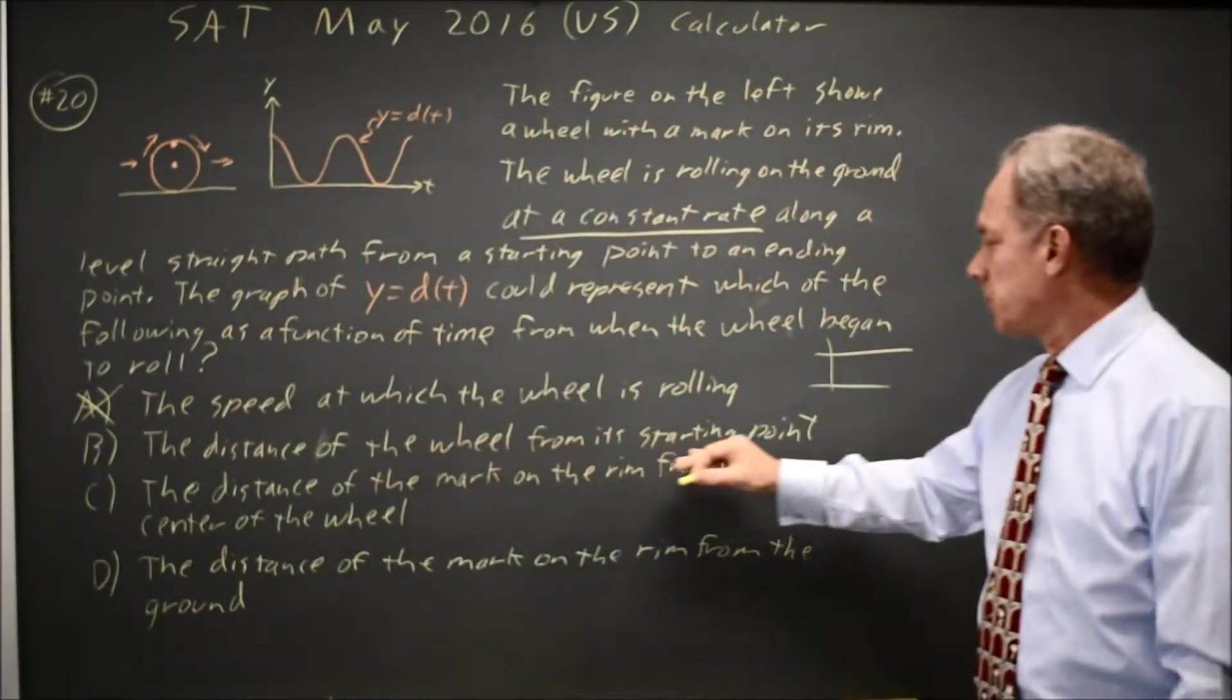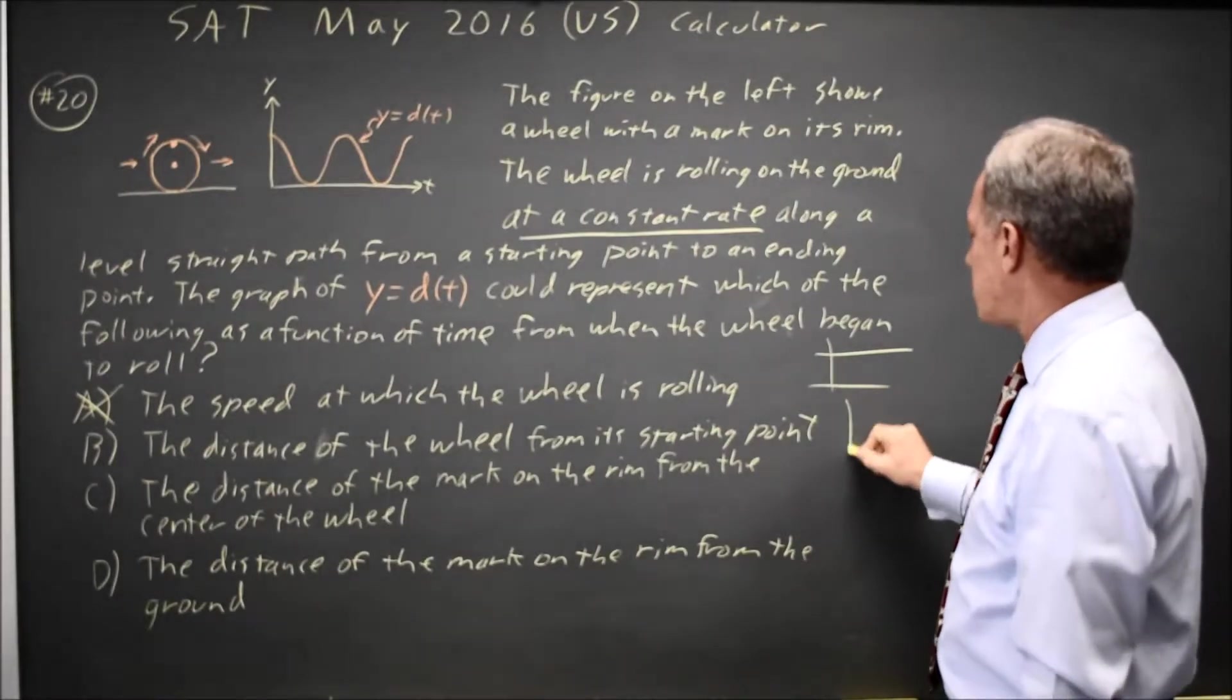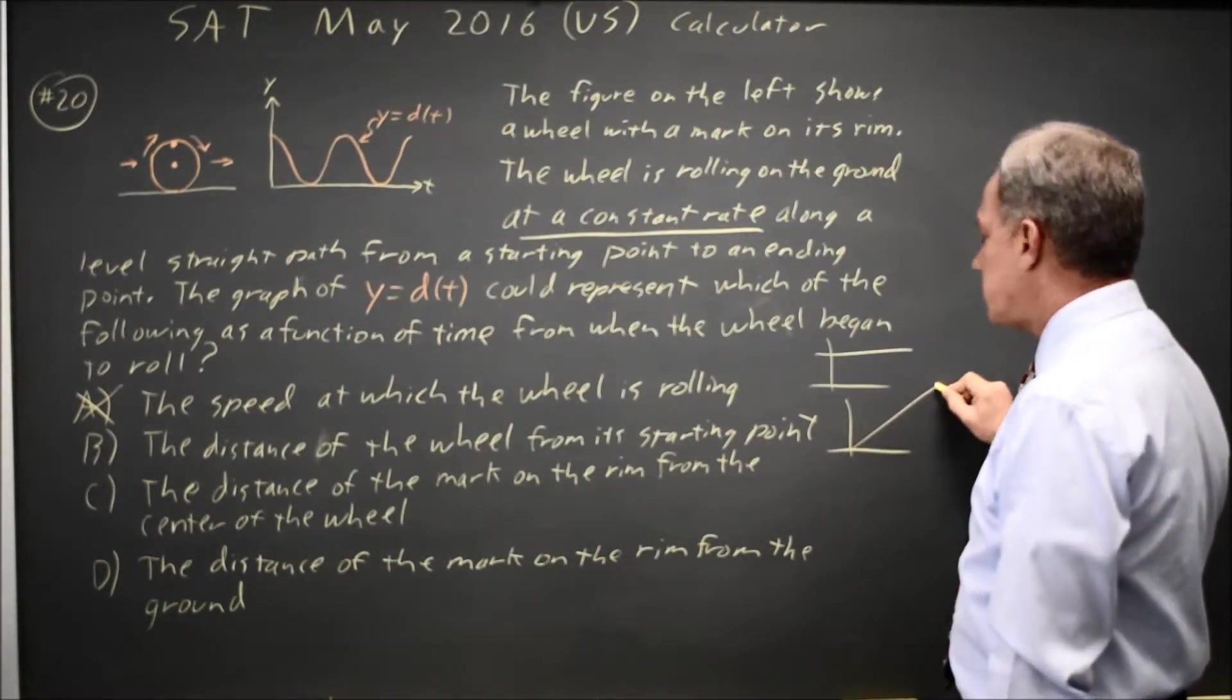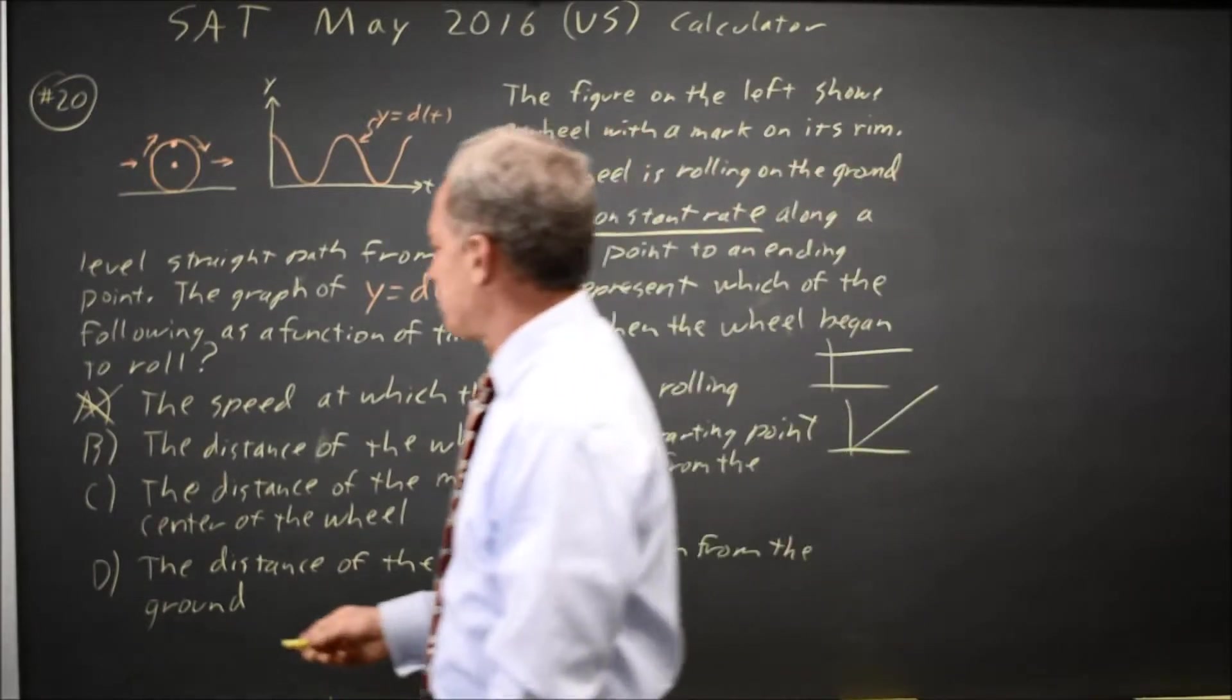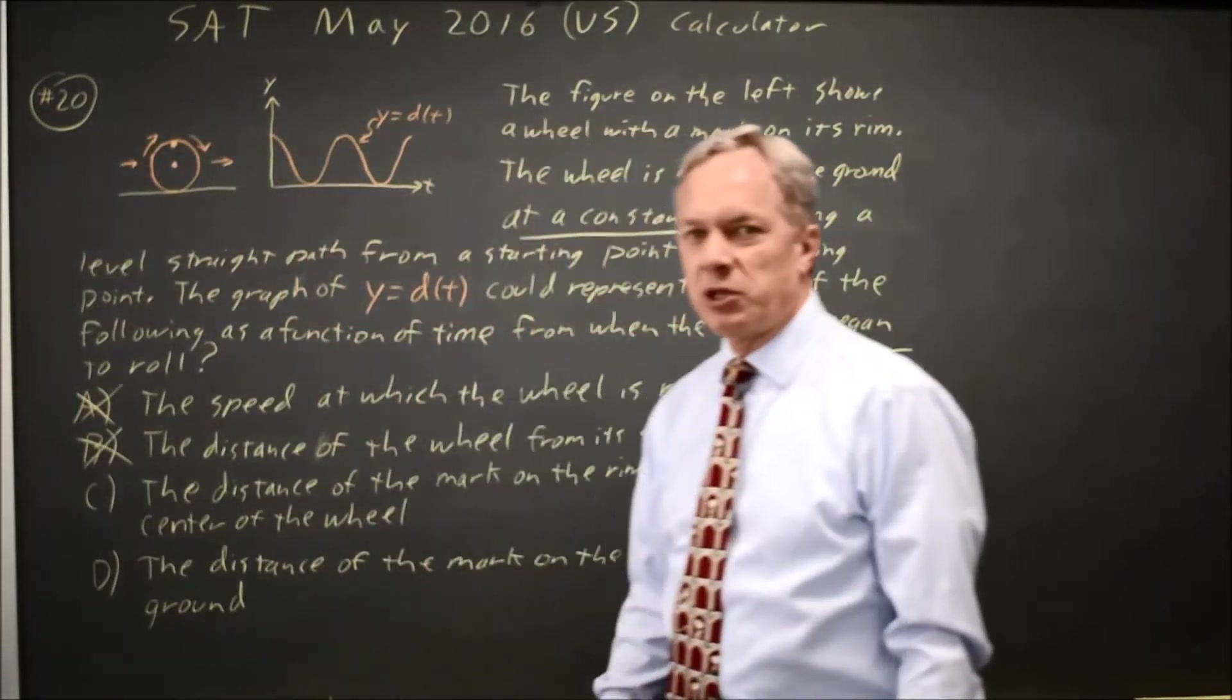Choice B is the distance of the wheel from its starting point. If you're moving at a constant rate, your distance from the starting point should be a line with a positive slope. This looks more sinusoidal, so choice B is wrong.